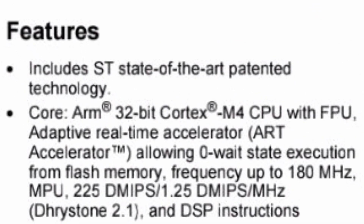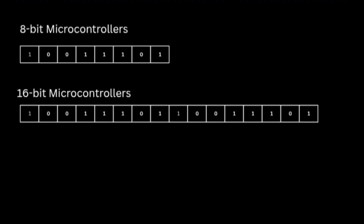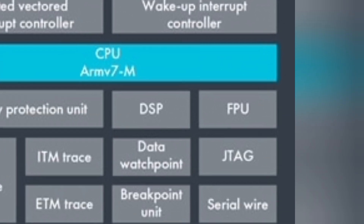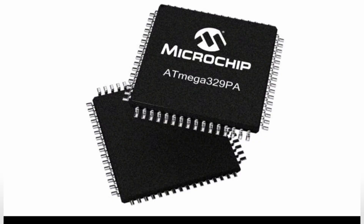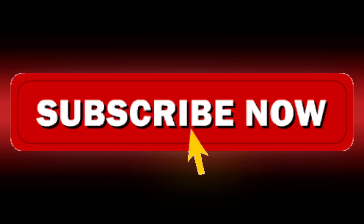If the MCU is 8-bit, each register holds 8 bits, which is 1 byte. If the MCU is 16-bit, each register holds 16 bits, which is 2 bytes. If the MCU is 32-bit, each register holds 32 bits, which is 4 bytes. Some advanced ones, like the ARM Cortex-M7 with FPU, can even have 64-bit registers for special math operations. We'll talk more about how microprocessors and microcontrollers work, and about word size and the CPU in general, in a future video, so make sure to subscribe so you don't miss it.